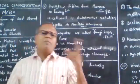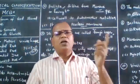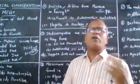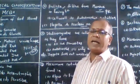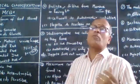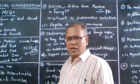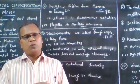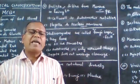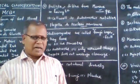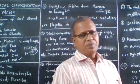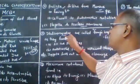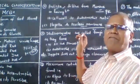Fungi are classified into four classes: Phycomycetes (algal fungi), Ascomycetes (ascus fungi), Basidiomycetes (basidium fungi), and Deuteromycetes (the fungi imperfecti). Deuteromycetes are said to be fungi imperfecti.